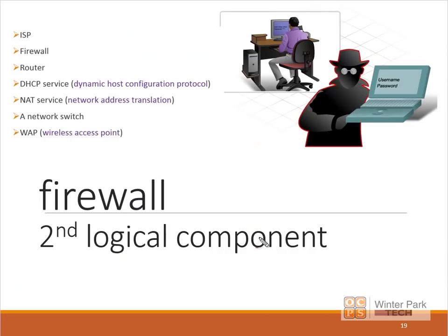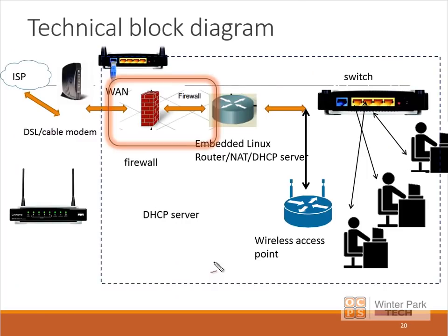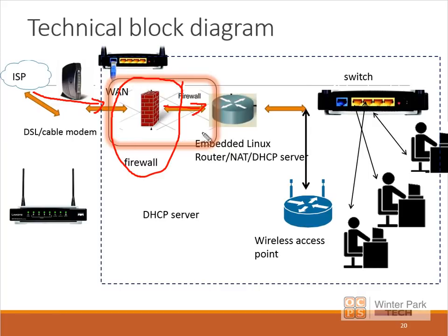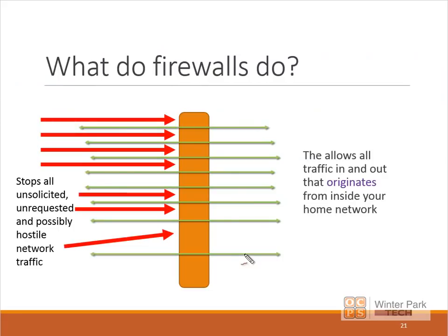The firewall is the second logical component we're going to start with. This slide breaks down and helps you understand where these logical components are relative to one another. The firewall's position is right between the ISP — which we call the WAN — and where our router interface begins. The firewall provides protection between the internet and our internal home network.